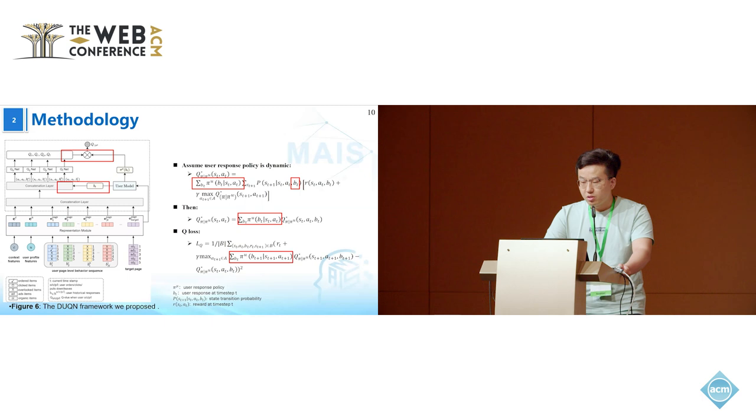Different user responses will have different corresponding Q values, and the final Q value is the weighted sum of the Q values on the four types of user responses. The four types of user responses are pulling down, order, click, or leave.